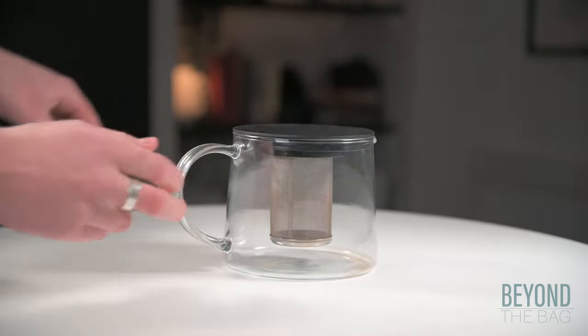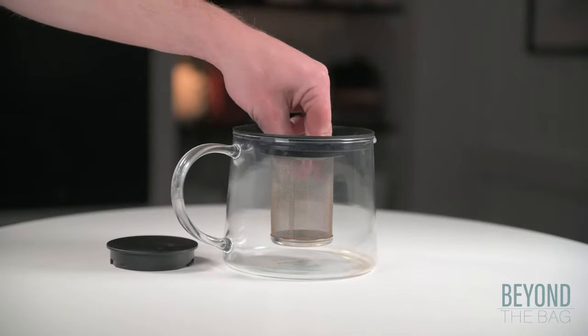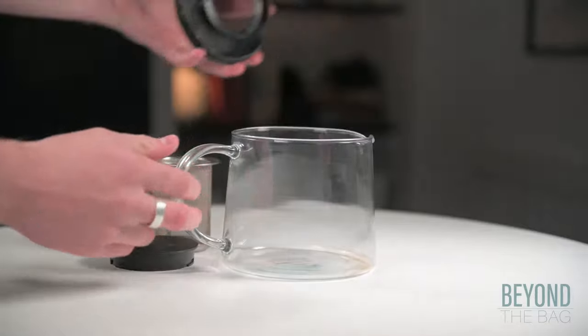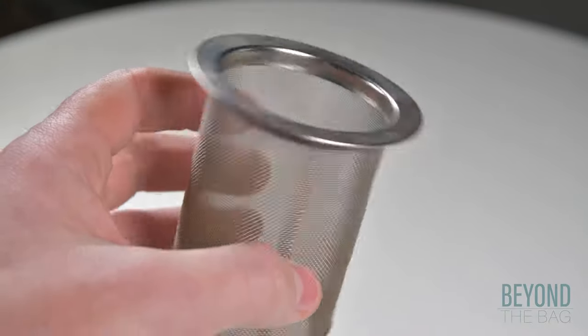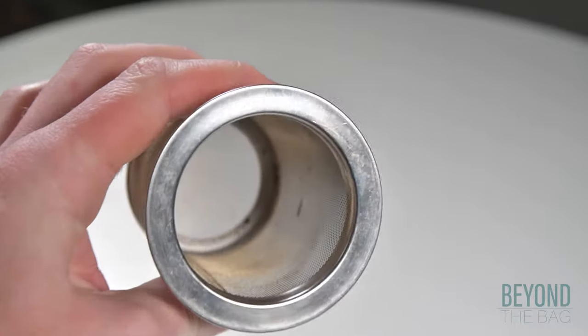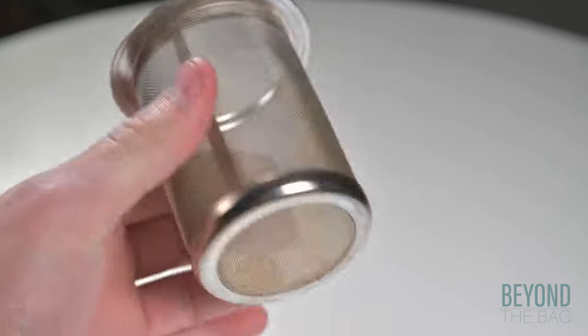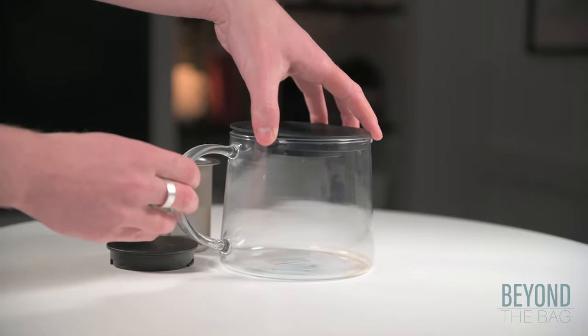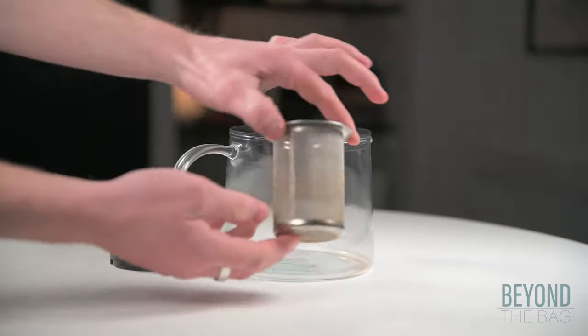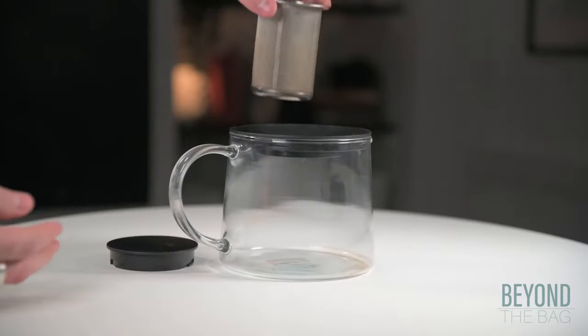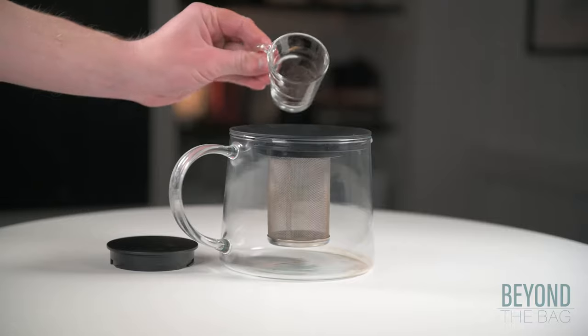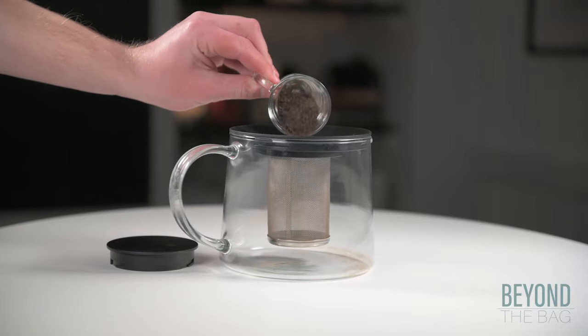Most modern teapots like this one from Ikea come with a metal or plastic infuser which makes them quite easy to use. Simply place the infuser into the teapot and add the loose leaf tea of your choice. Here we are using a light Ceylon black tea.